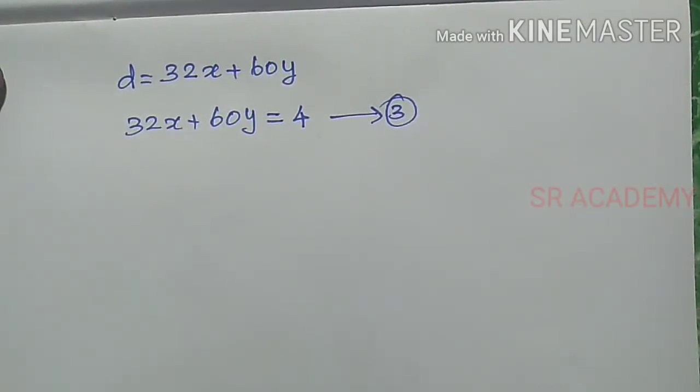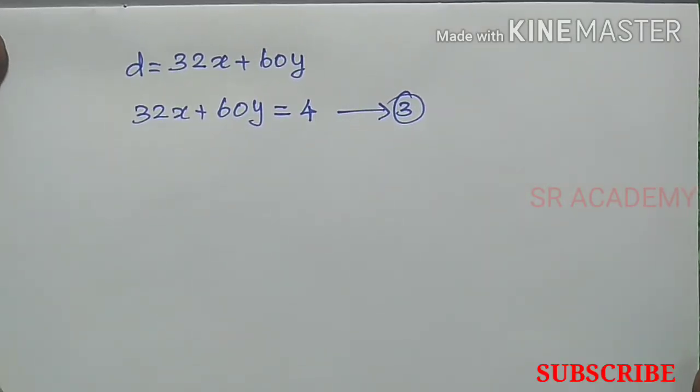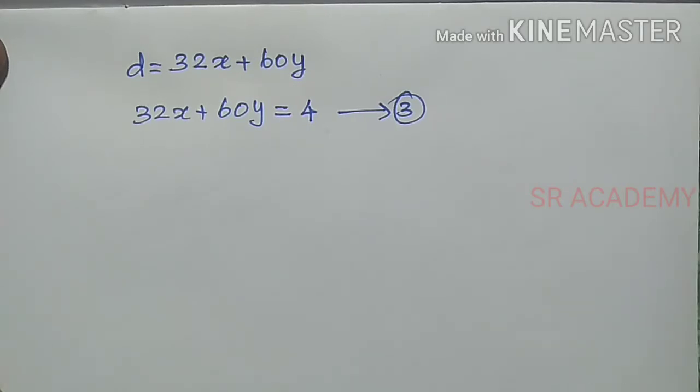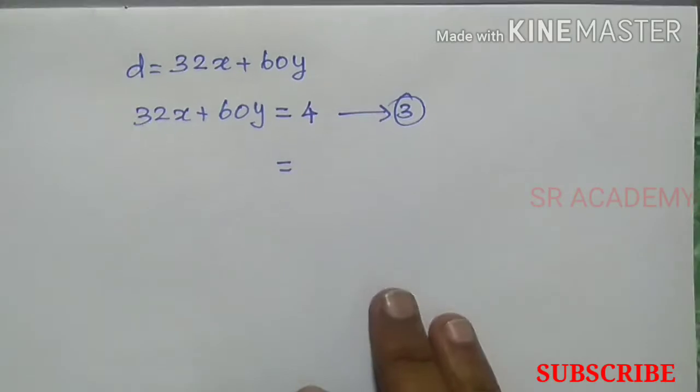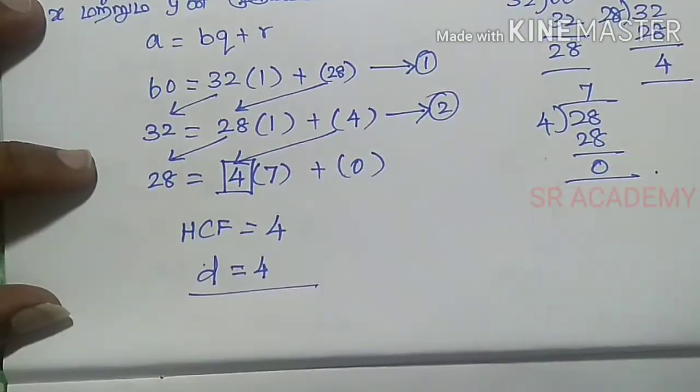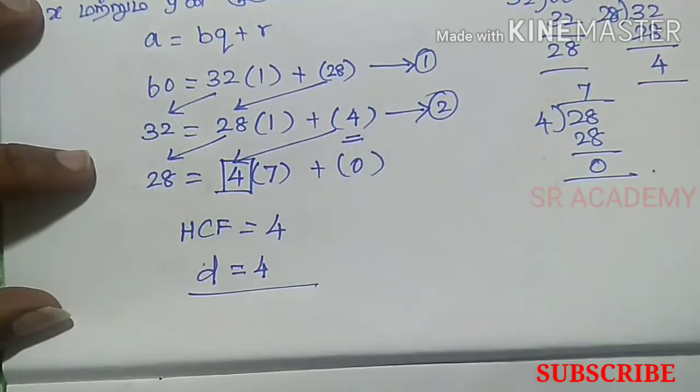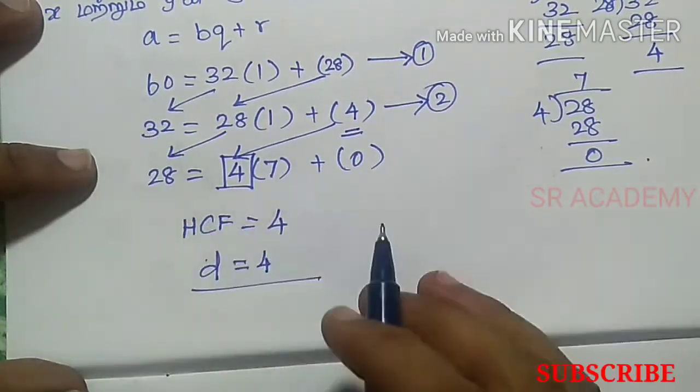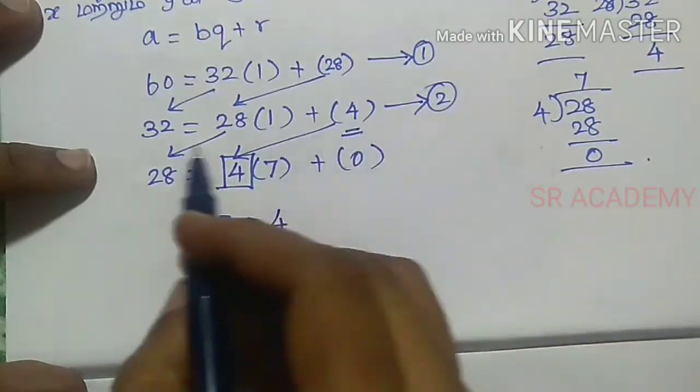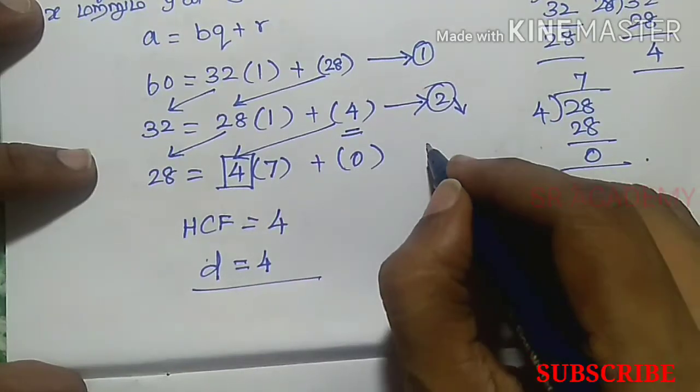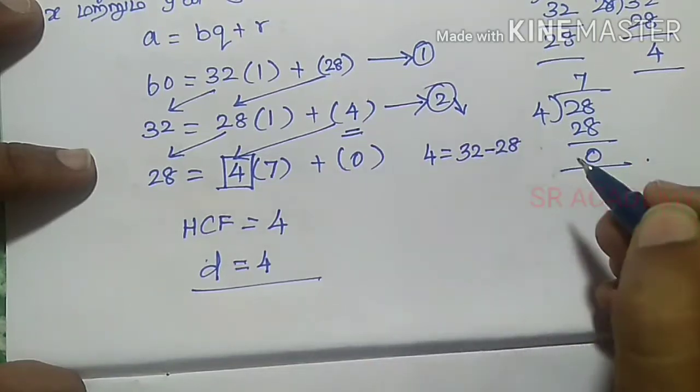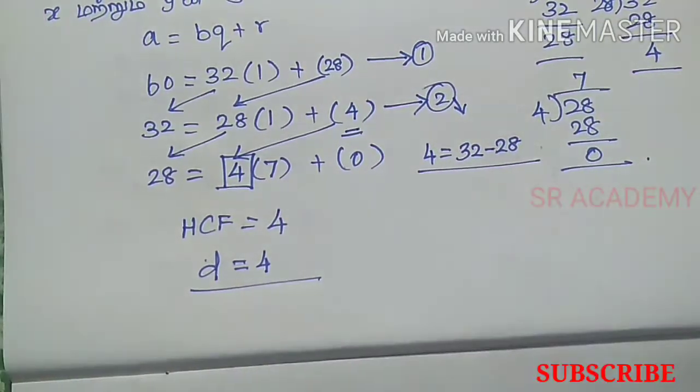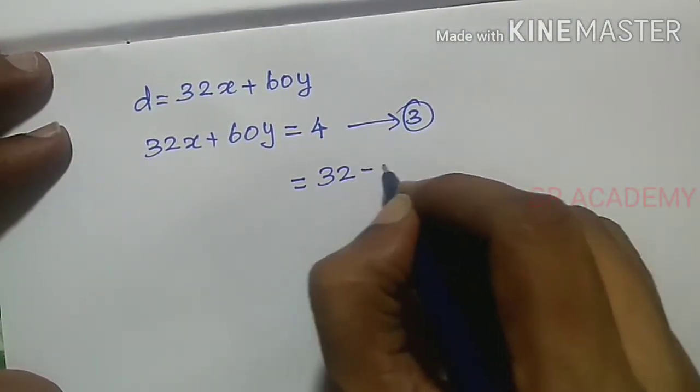Now, we need to find the values of X and Y. These are 2 variables in one equation. From equation 2: 4 equals 32 minus 28. Let this be equation number 5.